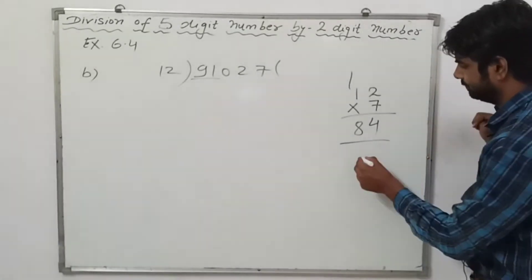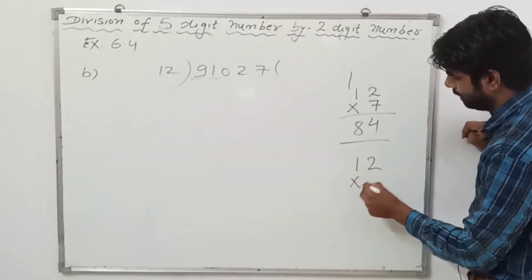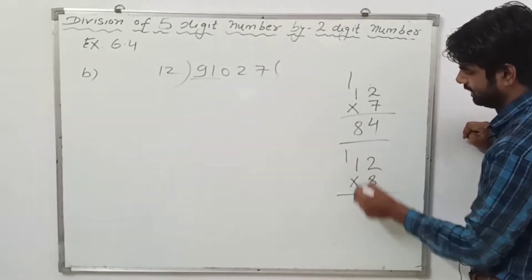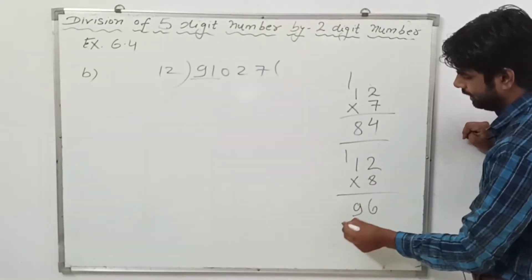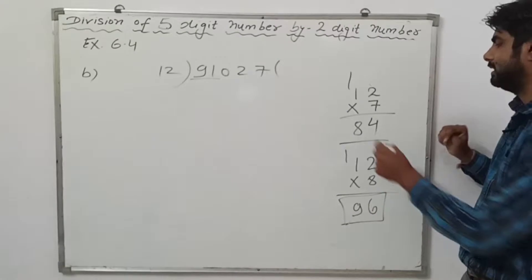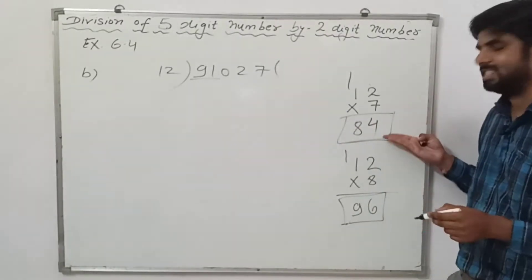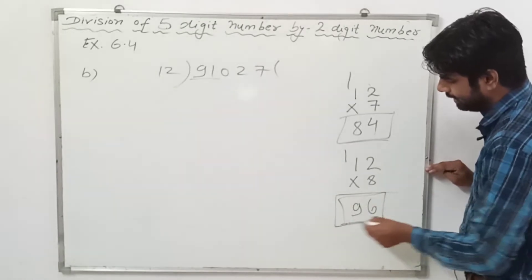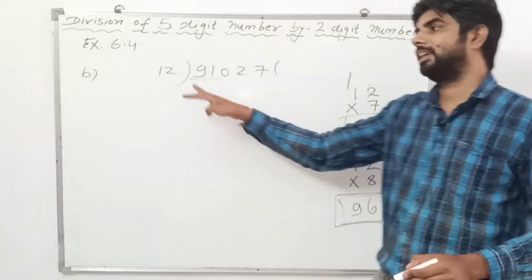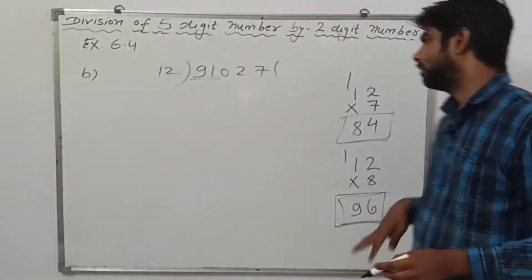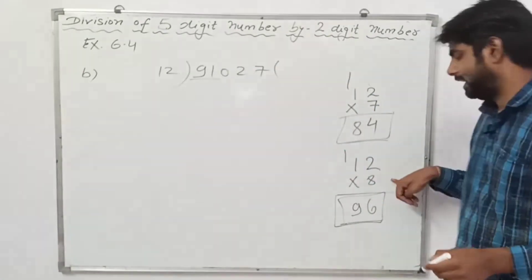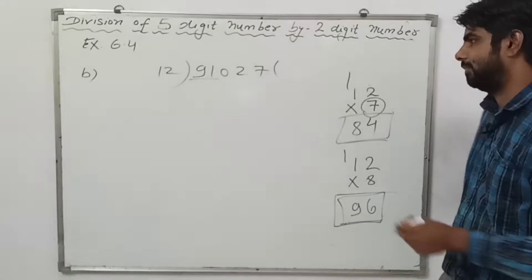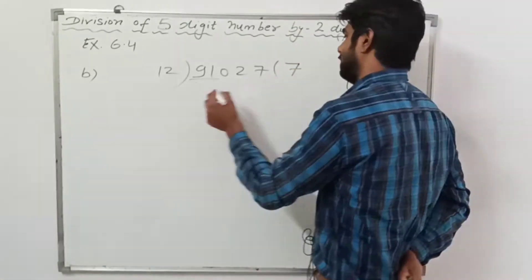Now let's see what happens if we multiply by 8: 8 times 2 is 16, carry 1; 8 times 1 is 8, plus 1 is 9 — that gives 96. So 12 times 7 is 84 and 12 times 8 is 96, but 96 is greater than 91, so we cannot take 8 as our quotient digit. We will use 7, so 12 sevens are 84.